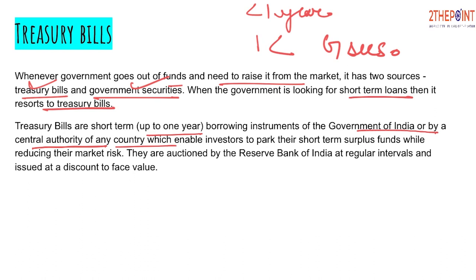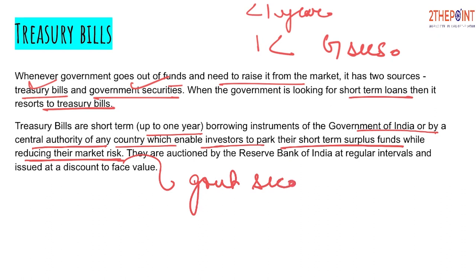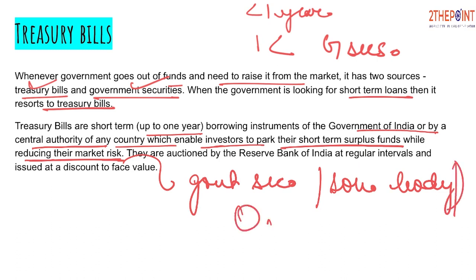It is not that only the Indian government will issue them. Every country's central bank can issue Treasury Bills whenever it needs money. This enables investors to park their short-term surplus funds while reducing their market risk. These are government securities issued by a sovereign body, so the default risk is zero — meaning there is no risk of payment default.